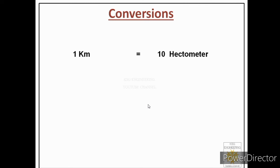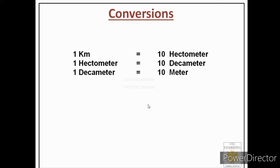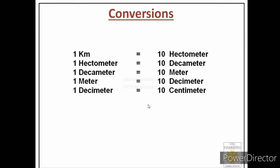Before taking examples, let us review the conversions: 1 km = 10 hectometers, 1 hectometer = 10 decameters, 1 decameter = 10 meters, 1 meter = 10 decimeters, 1 decimeter = 10 centimeters, 1 centimeter = 10 millimeters. You must keep these conversions in mind to solve problems on scales.